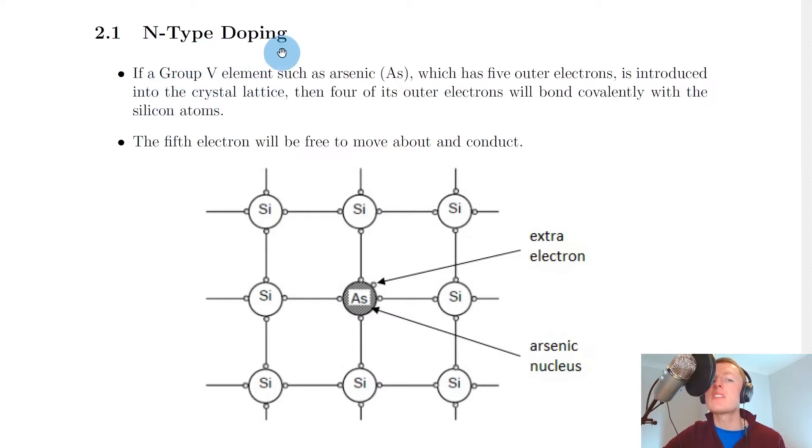So in order to carry out n-type doping, if a group 5 or group V element such as arsenic, which has five outer electrons, is introduced into the crystal lattice, then four of its outer electrons will bond covalently with the silicon atoms.